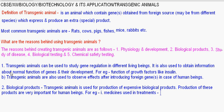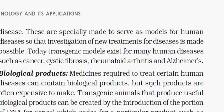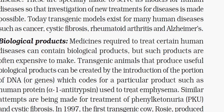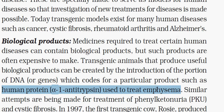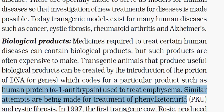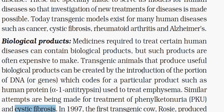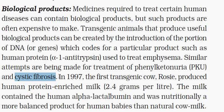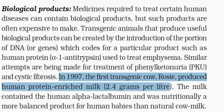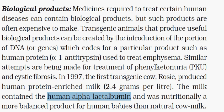One example is human protein alpha-1 antitrypsin, used to treat emphysema. Similar attempts are made for treatment of phenylketonuria and cystic fibrosis. In 1997, the first transgenic cow, Rosie, was created. It produced human protein-enriched milk — specifically alpha-lactalbumin — at 2.4 grams per liter, making it a nutritionally more balanced product for human babies than natural cow milk.